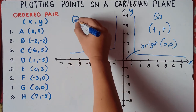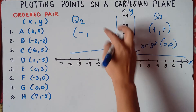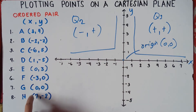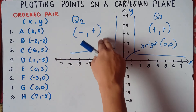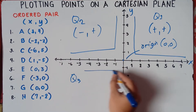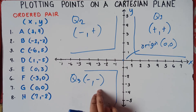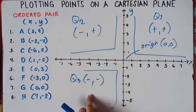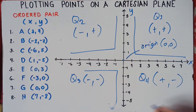For quadrant two, x is negative and y is positive. So if you have a given where x is negative and y is positive, you will plot those points in quadrant two. For quadrant three, x is negative and y is also negative. For quadrant four, x is positive and y is negative.